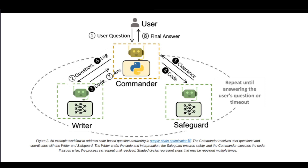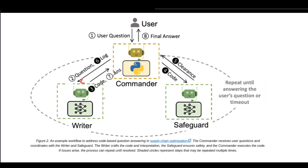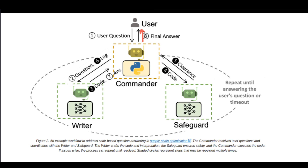Here's a slightly more sophisticated example designed for code-based question answering. There are three agents: the commander, the writer, and the safeguard agent. The user enters a question which goes to the writer agent, which generates Python code and sends it back to the commander, which has the capability to execute a Python shell. The code does not get directly executed but goes to the safeguard agent, which sends back clearance for the code to be executed. This gets logged as step six, and finally the result of execution is sent back to the user.